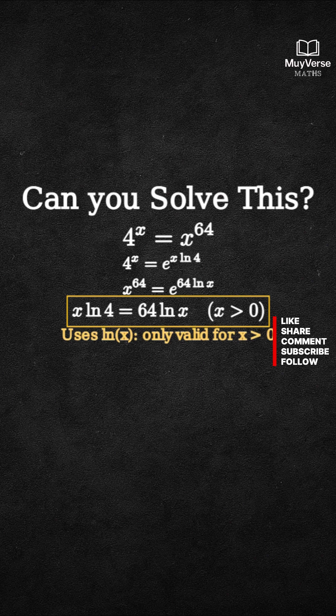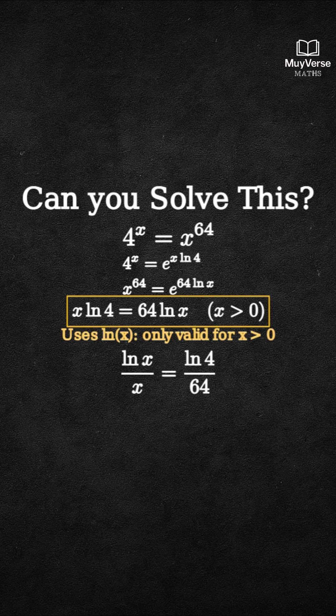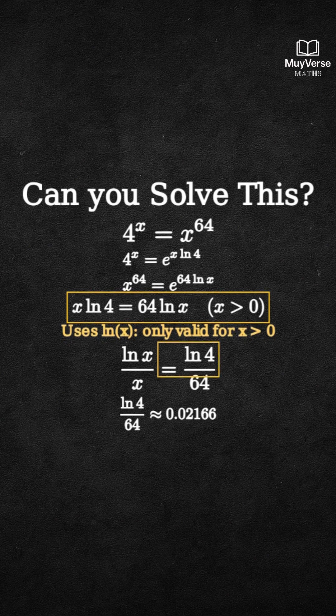Step 2. Rearrange for a clean visual comparison. Divide both sides by x and by 64. We get ln x over x equals ln 4 over 64. The constant on the right is approximately 0.02166.